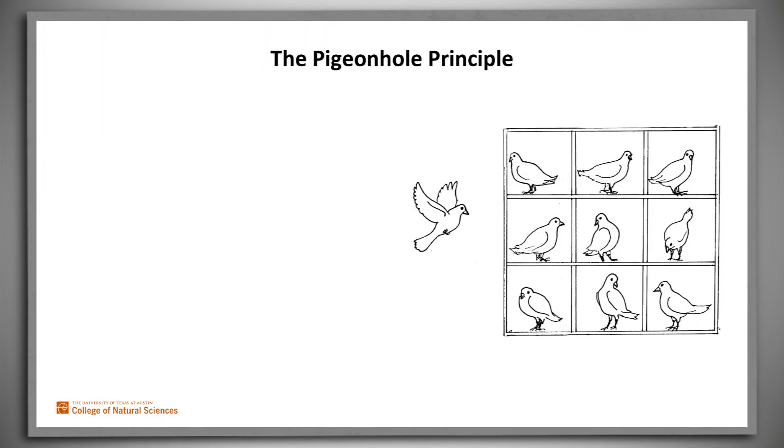We've just seen an example of the pigeonhole principle. There are k chairs, in this case 4. There are n students, in this case 6, and n is greater than k.